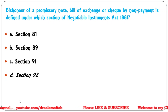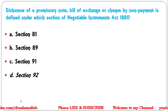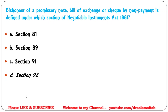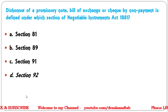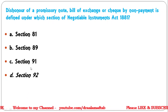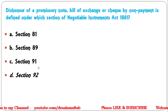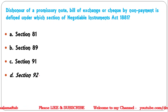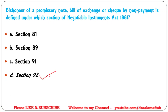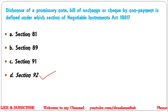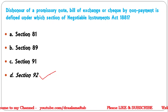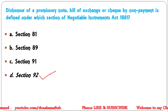Next question: Dishonor of a promissory note, bill of exchange, or cheque by non-payment is defined under which section of the Negotiable Instruments Act 1881? Options: Section 81, 89, 91, or 92. The correct answer is Section 92 — under Section 92, dishonor of a promissory note, bill of exchange, as well as cheque by non-payment is defined.